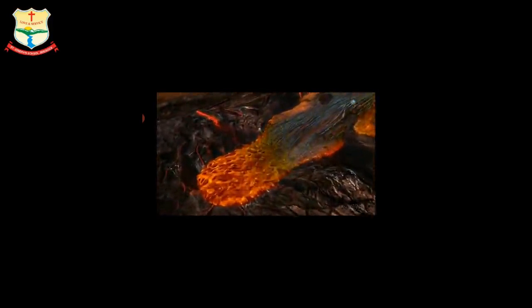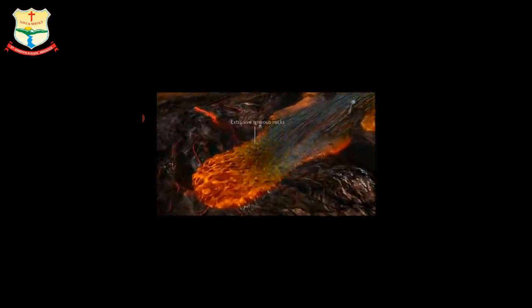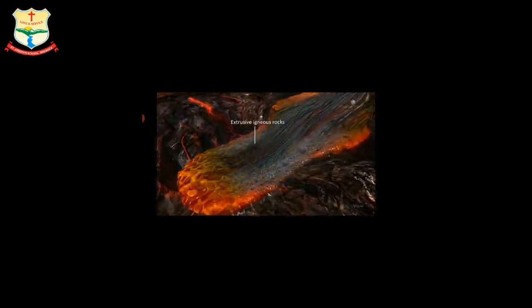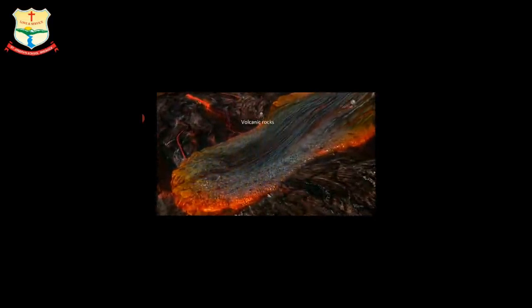The cooling and solidification of lava at the Earth's surface results in the formation of extrusive igneous rocks, also known as volcanic rocks. Due to rapid cooling, their crystals are fine-grained.